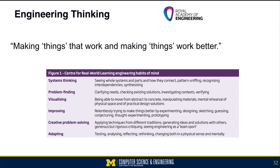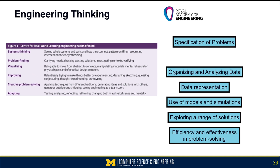This is the definition of engineering thinking from the Royal Academy of Engineering, where their goal is for students to know how to make things that work and make things that work better. Looking at the habits of mind they recommend for someone who thinks like an engineer, I see words like synthesizing and checking existing solutions. As we go through this definition of engineering thinking, we see that it lines up pretty well with computational thinking: engineers should know how to specify problems, organize and analyze data, use different data representations, use models and simulations, explore a range of solutions, and be concerned with efficiency and effectiveness in problem solving.